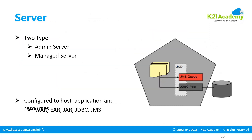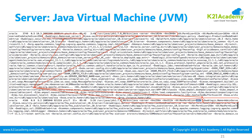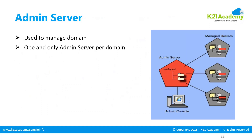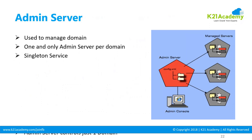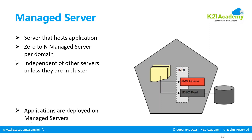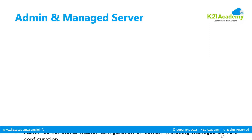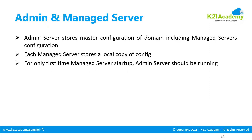We looked at servers — two different types: admin servers and managed servers. We also looked at the Java Virtual Machine (JVM), including minimum and maximum memory settings. The admin server is a singleton service, while the managed server is where you deploy your applications or custom applications.